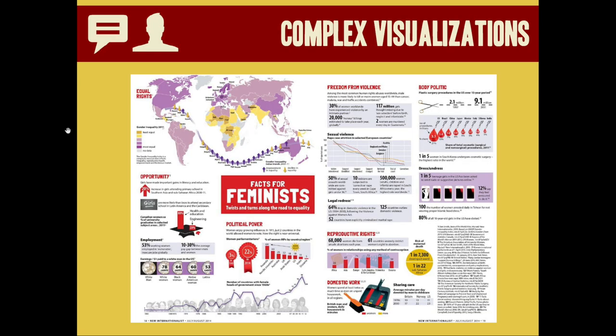Complex visualizations can combine a number of different ones to give them more power than they would have individually. Things like infographics that are printed in magazines, newspapers, and online publications often do this. Here's a visualization, an infographic, about feminism and gender rights across the world. Notice how we have lots of different types of data visualizations here. We've got a map, we've got some line charts, we have different scale graphs showing off gender parity in legislatures across the world, as well as the pay gap in the United States between white men and women of different races.